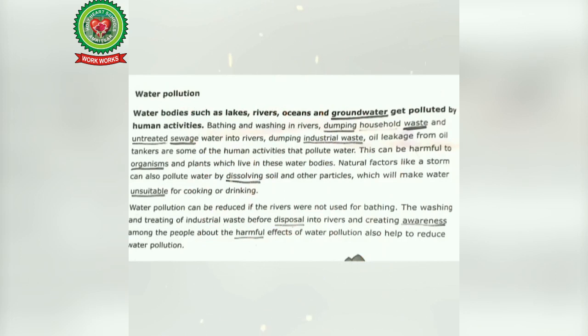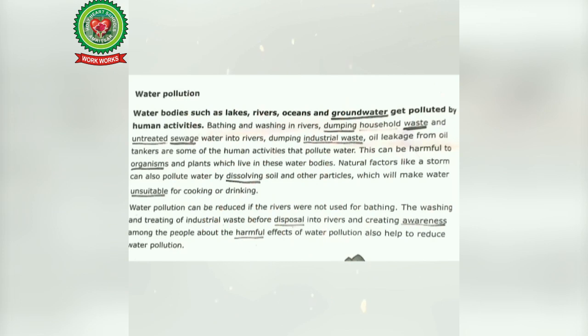Now students, open page number 76 of your book and see the point on water pollution. Water pollution means the action of making water dirty and dangerous. Water bodies such as lakes, rivers, oceans, and groundwater get polluted by human activities. Bathing and washing in rivers, dumping household waste and untreated sewage water into rivers, dumping industrial waste, and oil leakage from oil tankers are some of the human activities that pollute water.